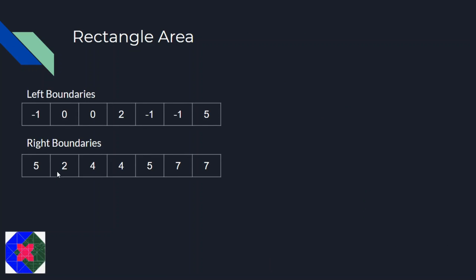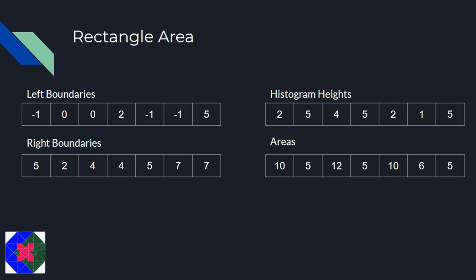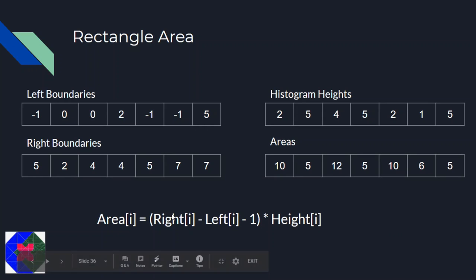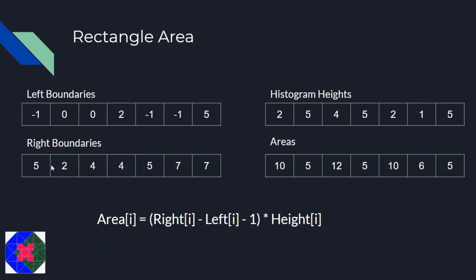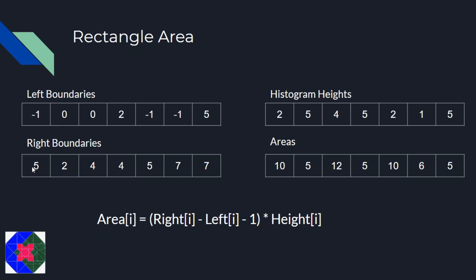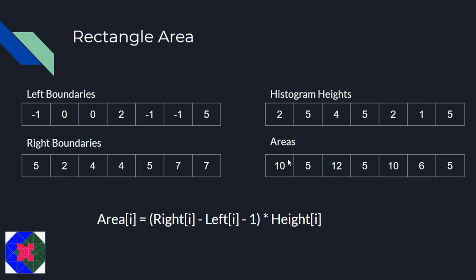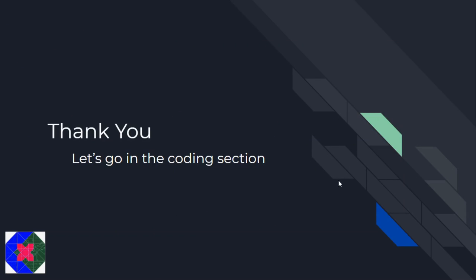Now we have the left boundaries, right boundaries, and histogram heights. We apply the formula: width = right minus left minus 1, then area = width into height. For example, 5 minus (minus 1) minus 1 = 5, and 5 into 2 = 10. We find the areas for all rectangles and the maximum comes to be 12, which is what we return. Let's go to the coding section.